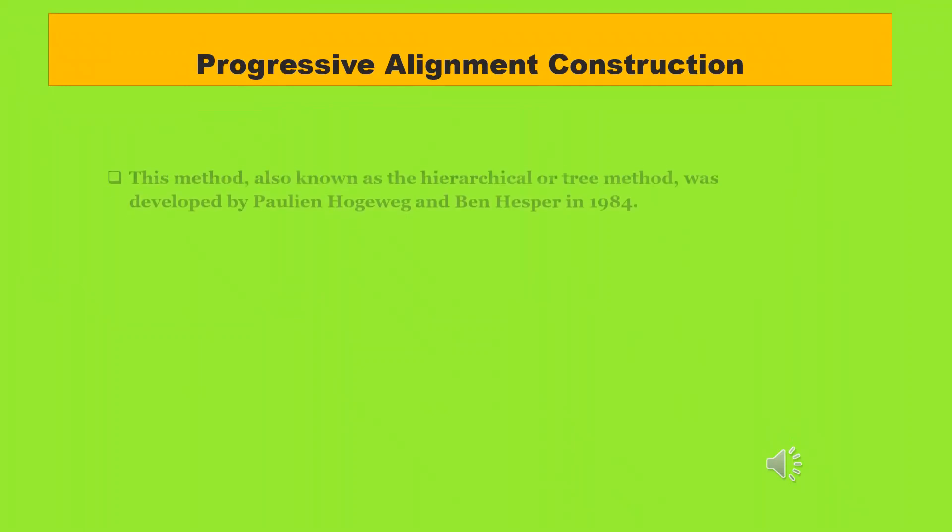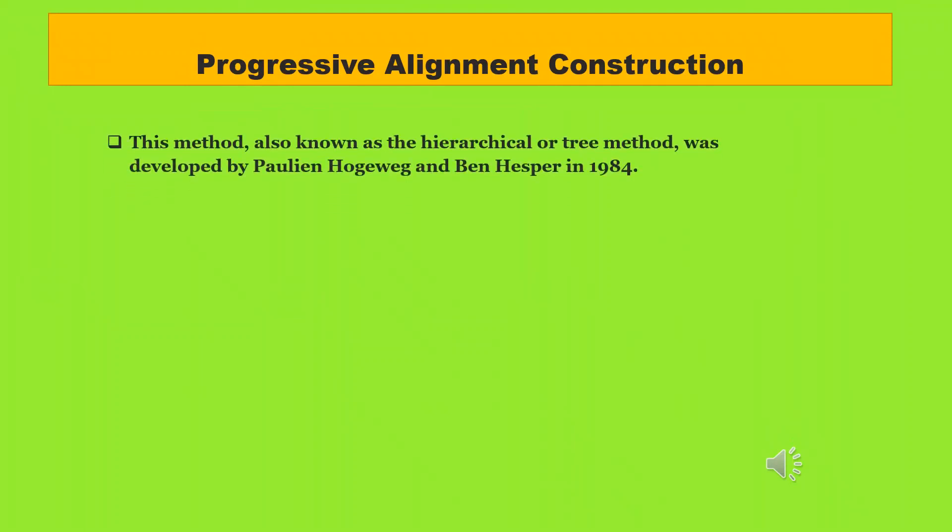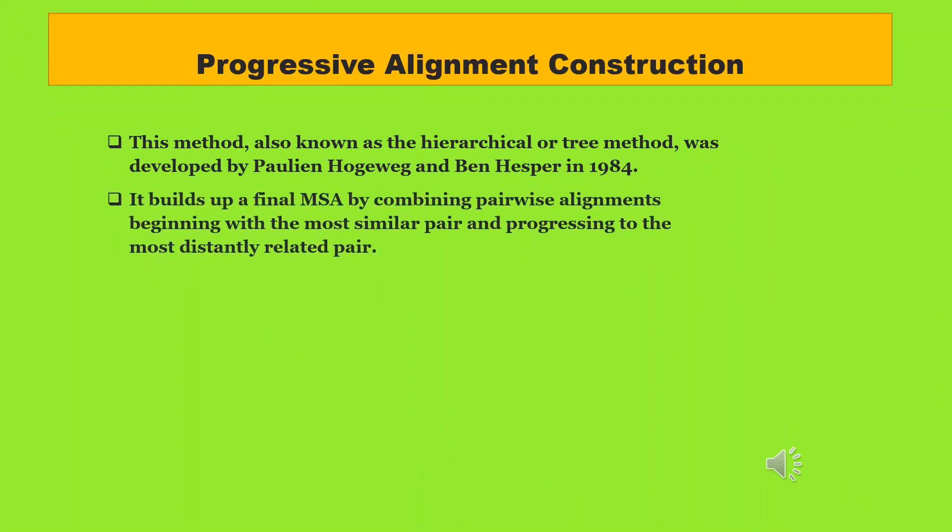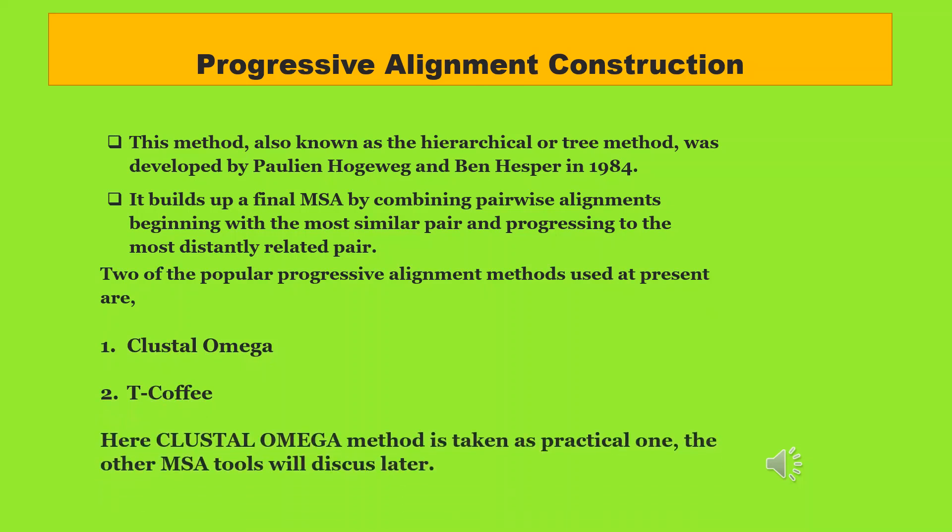Let us see first progressive alignment construction. This method also known as the hierarchical or tree method was developed by Pauline Haguig and Ben Hesper in 1984. It builds up a final MSA by combining pairwise alignments beginning with the most similar pair and progressing to the most distantly related pair. Two of the popular progressive alignment methods used at present are: 1. Clustal Omega. 2. Tea Coffee. Here, Clustal Omega method is taken as practical one. The other MSA tools will discuss shortly.